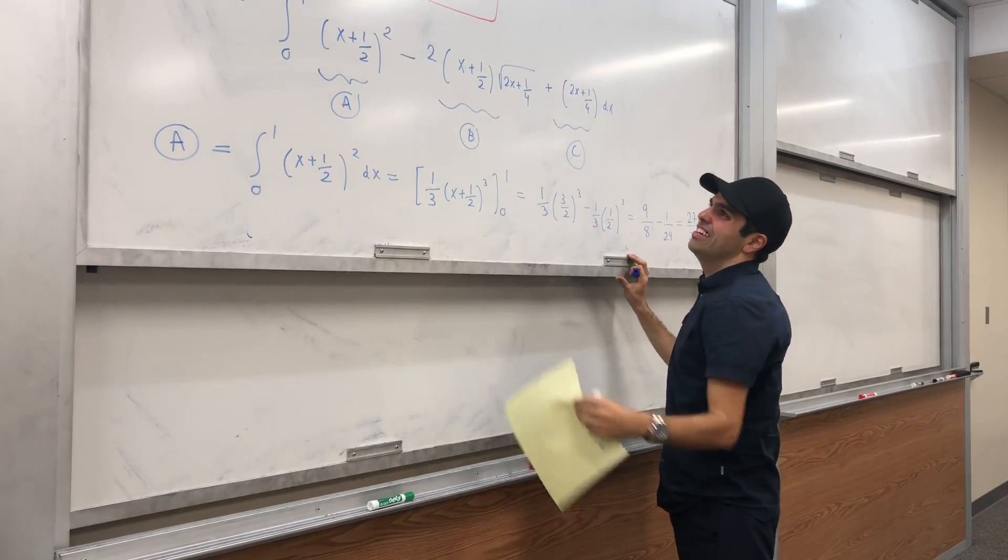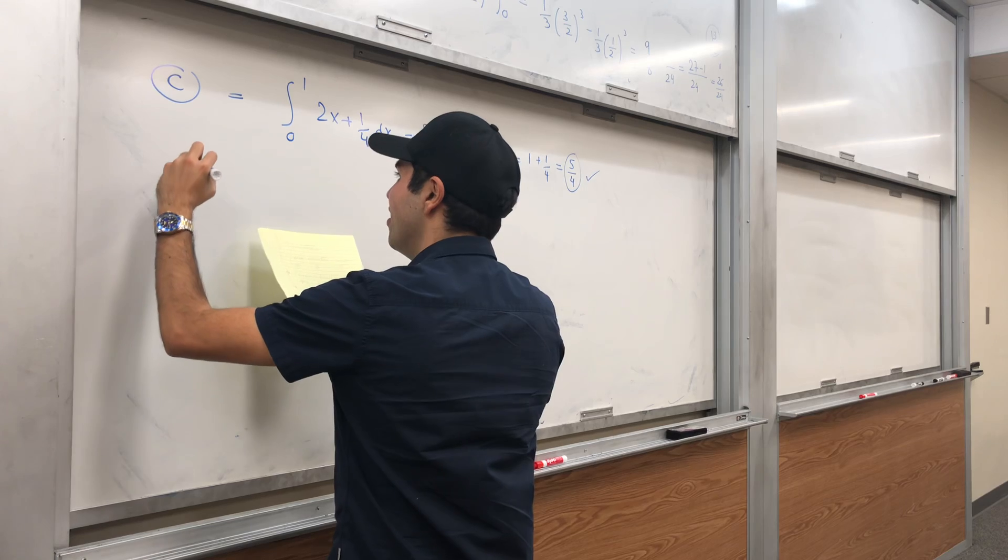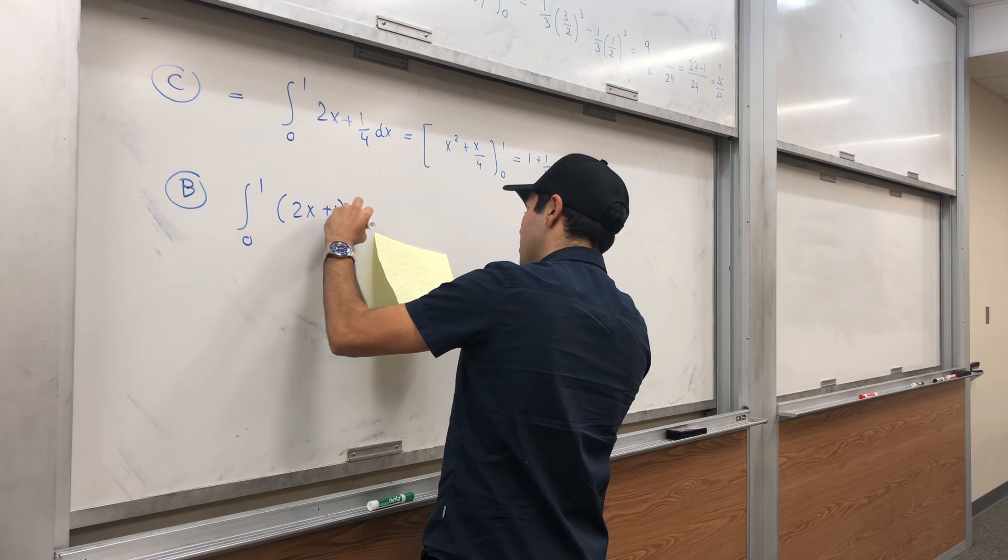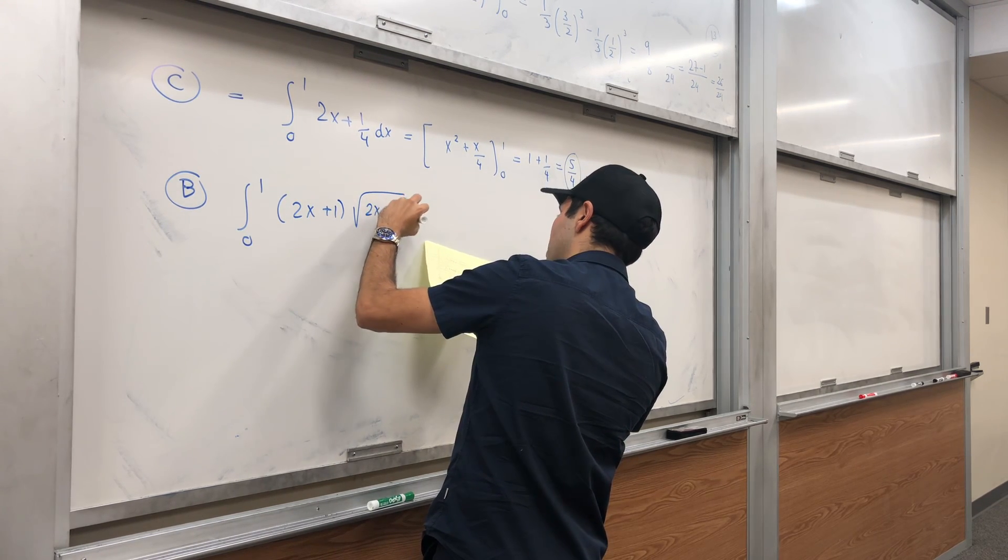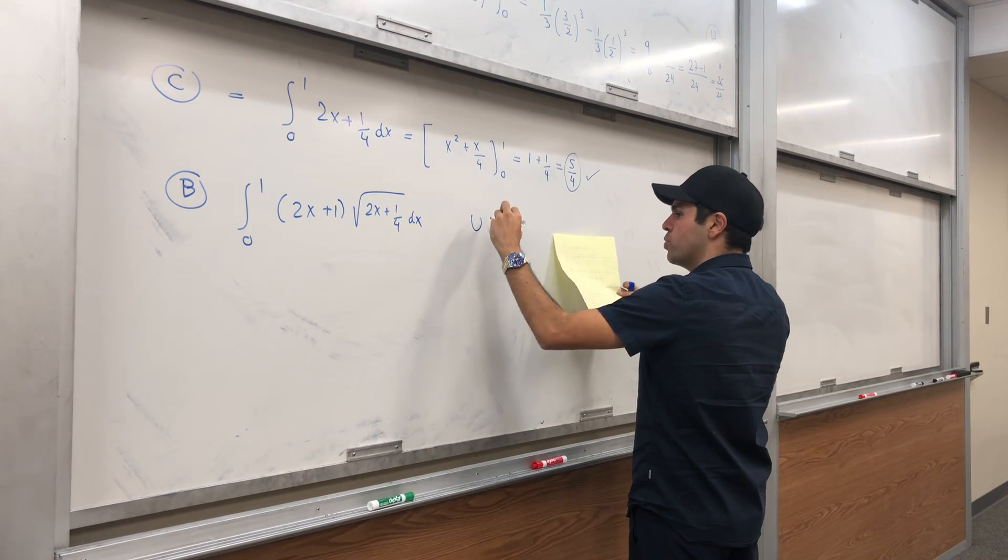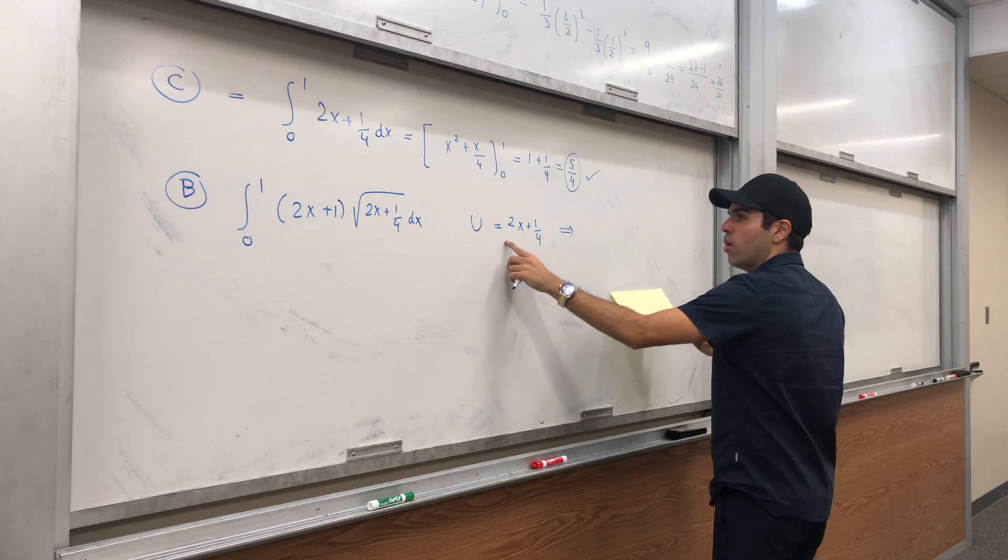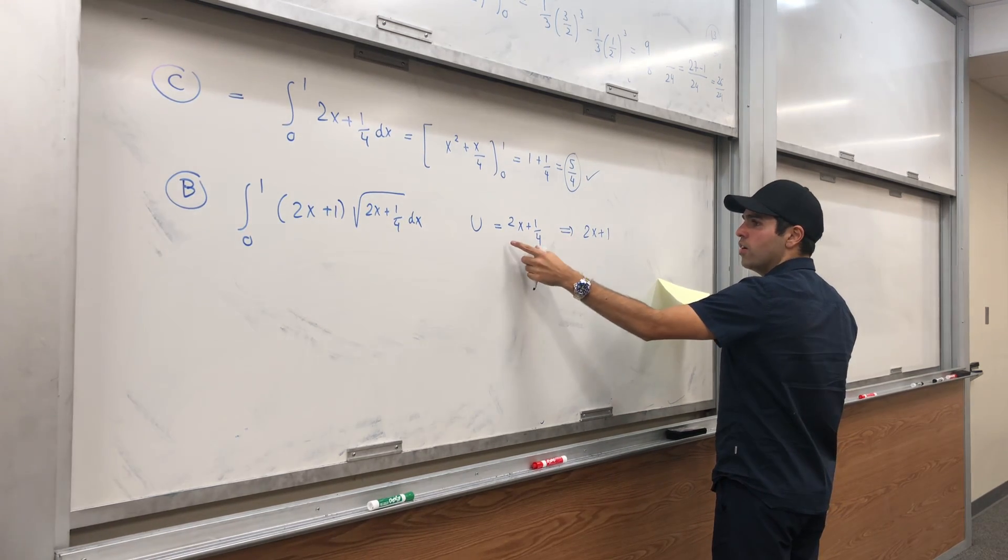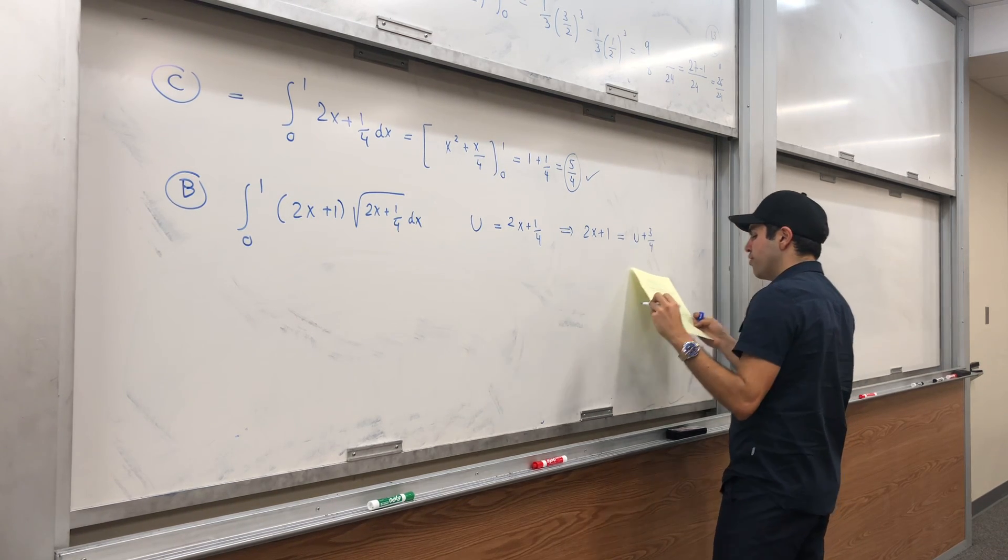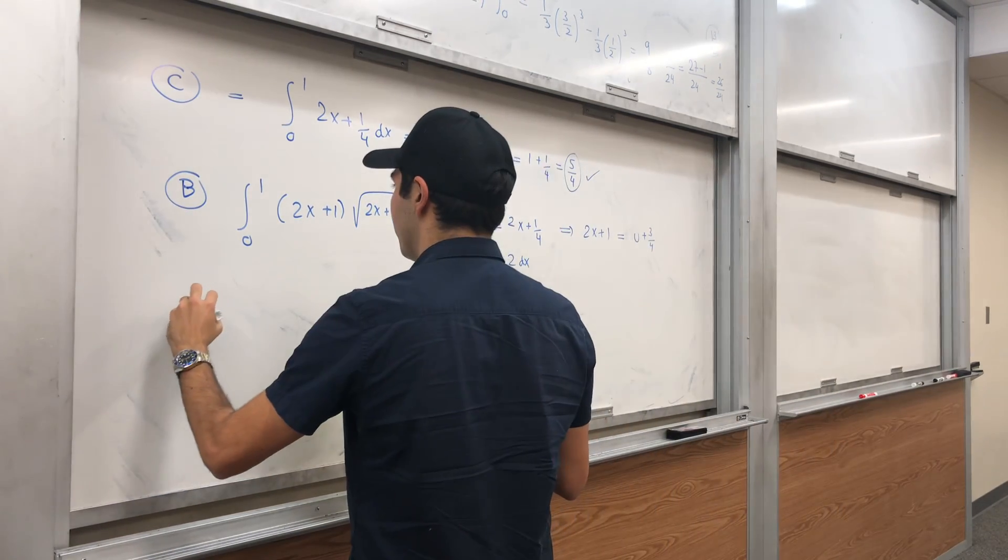And now let's evaluate the middle one, the monster of the integral. So let's evaluate just the positive side: integral from 0 to 1 of (2x + 1) times √(2x + 1/4) dx. Let's just use a u-substitution. So let's transform that into square root form. u = 2x + 1/4. To get from 2x + 1/4 to 2x + 1, you just add 3/4, so u + 3/4. And then du = 2dx.